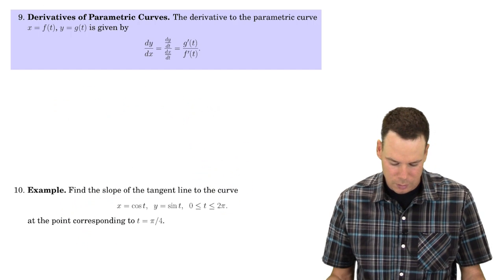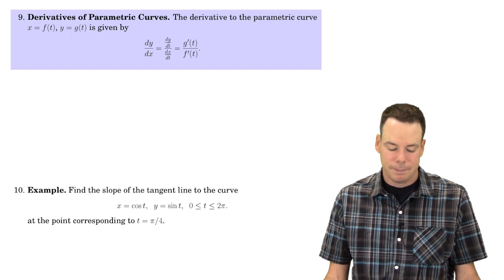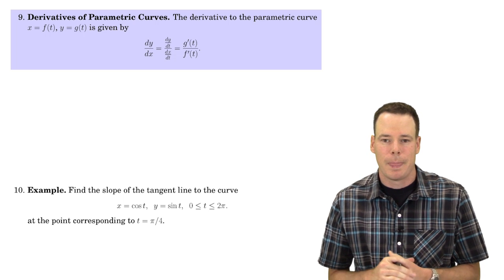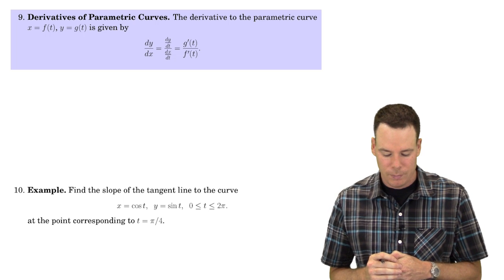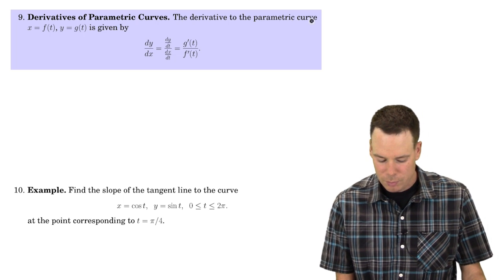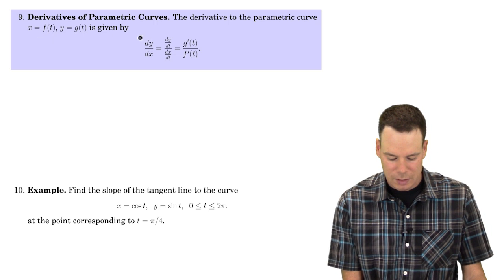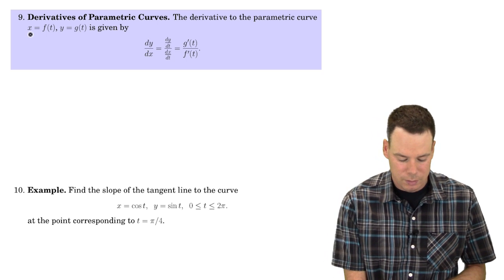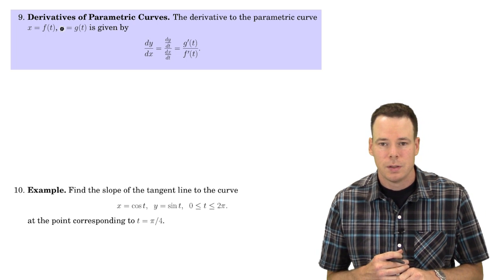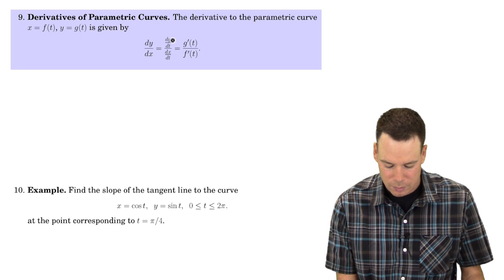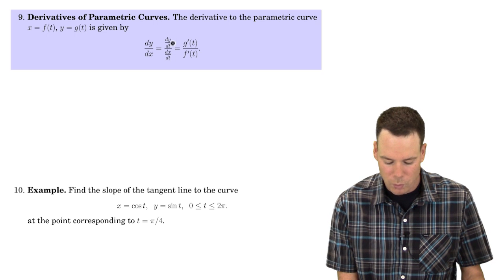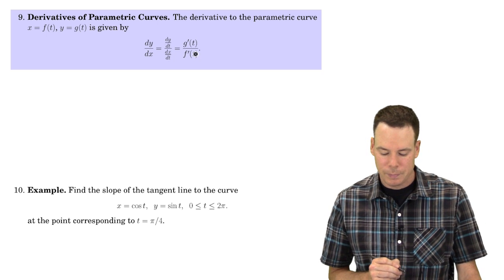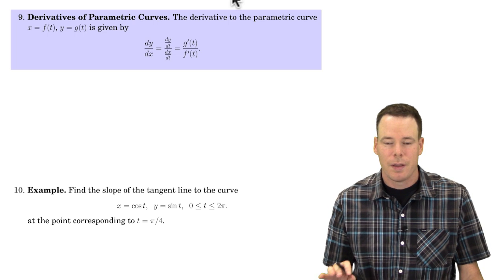Let's now move on to some calculus. What we're interested in is how do we find tangent lines to parametrized curves, to points on parametrized curves. The derivative to the parametric curve x equals f of t, y equals g of t, is given by dy/dx. Remember, x and y are functions of t. This tells us we just need to know the derivative of y with respect to t and divide it by the derivative of x with respect to t — in other words, it's g prime over f prime. This is nothing more than the chain rule.